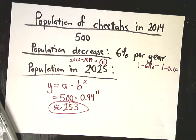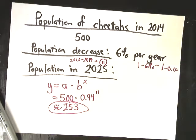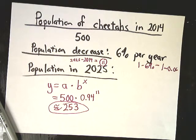That's exponential decay. It's not really that complicated. You need to convert the percentage and do 1 minus that decimal for your decay factor, and then you need to be smart about which exponent you pick so that it matches the correct number of time periods.